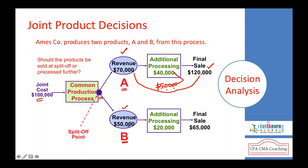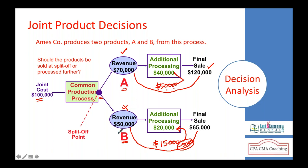Product B can be sold at $50,000 at the split-off point. If further processed and sold, it fetches $65,000 — an incremental revenue of $15,000. However, the additional processing cost is $20,000, resulting in a loss of $5,000. So Product B should not be further processed; it is to be sold at the split-off point. Product A is further processed and sold, while Product B is sold at the split-off point.